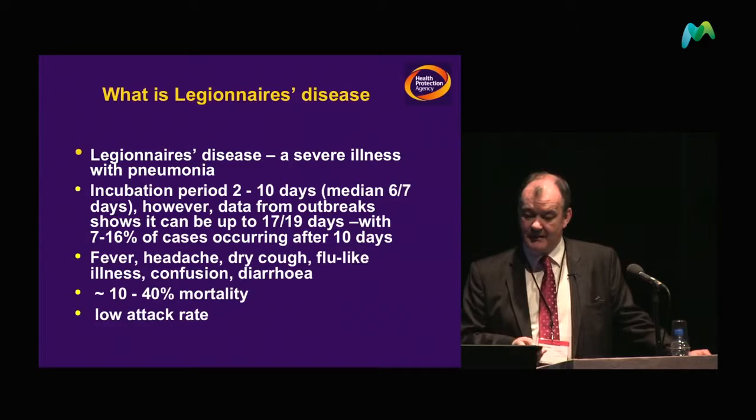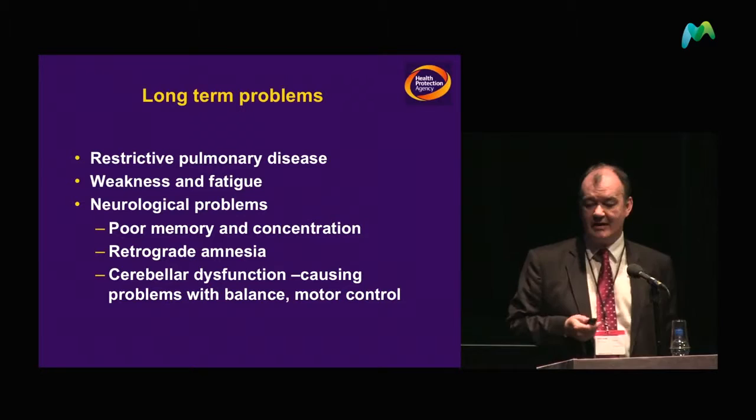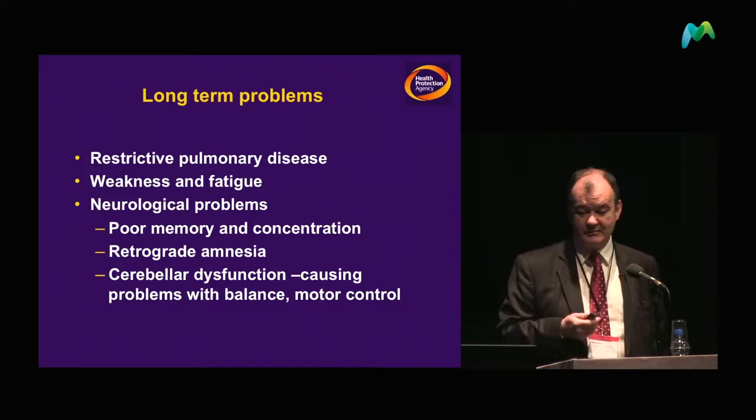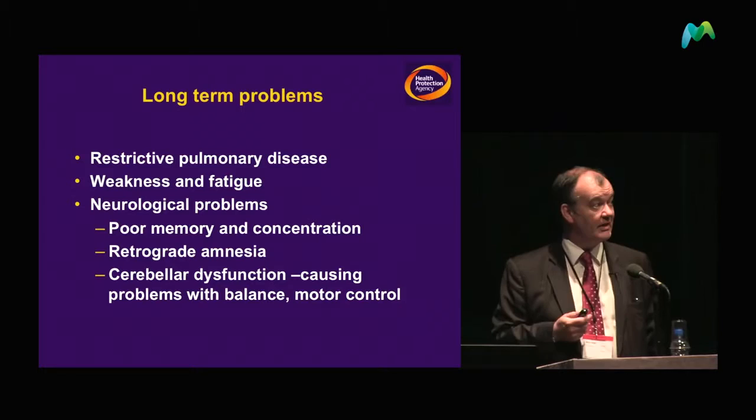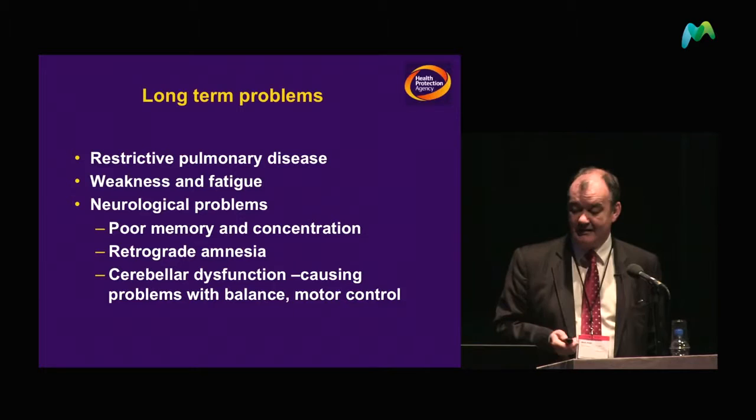That's a picture of a typical lung you would see with Legionnaires' disease. We often talk about the acute presentation, but it is not uncommon to get long-term problems — restrictive pulmonary disease and neurological problems being some of the biggest. It's also a problem when questioning patients because they get retrograde amnesia, and many key details are difficult to elucidate.